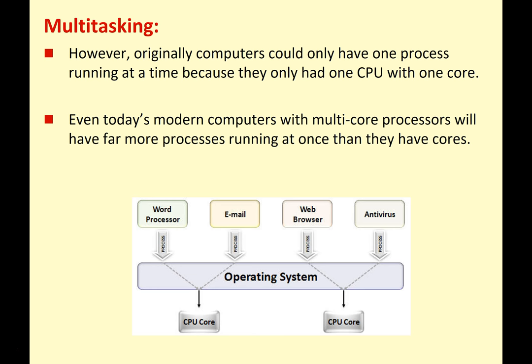Originally computers could only do one process at a time because they only had one CPU with one core. A single core CPU can only process one instruction at a time. Even today's modern computers with multi-core processors will have far more processes running at once than they have cores.